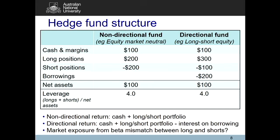Even if you have equal dollars in long and short positions — which puts you in the equity market neutral category — if there's a beta mismatch you won't actually neutralize equity market risk. For example, a long portfolio beta of 2 and a short portfolio beta of 1 means a 10% market rise produces a 20% gain on longs but only a 10% loss on shorts, so you gain. And a 10% market fall produces a 20% loss on longs but only a 10% gain on shorts, so you lose. The category definition is about dollar amounts; the actual neutralization requires equal betas.